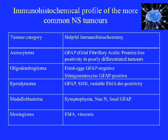Medulloblastomas, which are often seen in childhood, are positive for neuronal markers such as synaptophysin and UN, and also show focal positivity for the glial marker GFAP. Meningiomas tend to be positive for epithelial membrane antigen and fermentin.